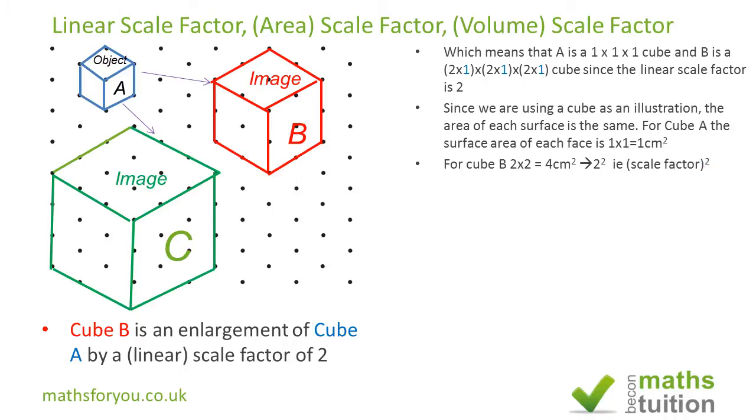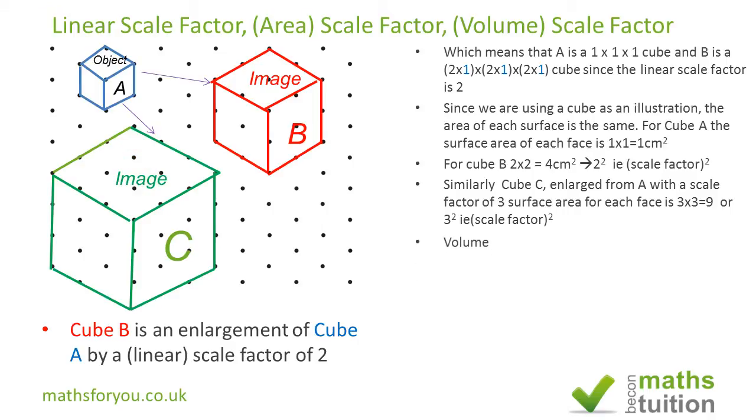Similarly for C, we've got C is 3 by 3, 3 times 3, so the area of this surface here is 3 times 3, and 3 times 3 is 9, and 9 is 3 squared. And once again, the area scale factor is linear scale factor squared.